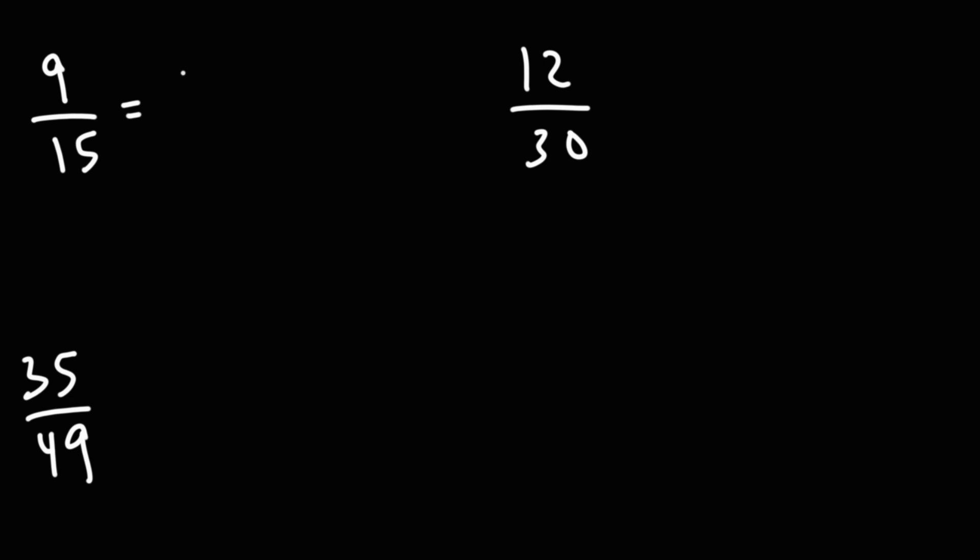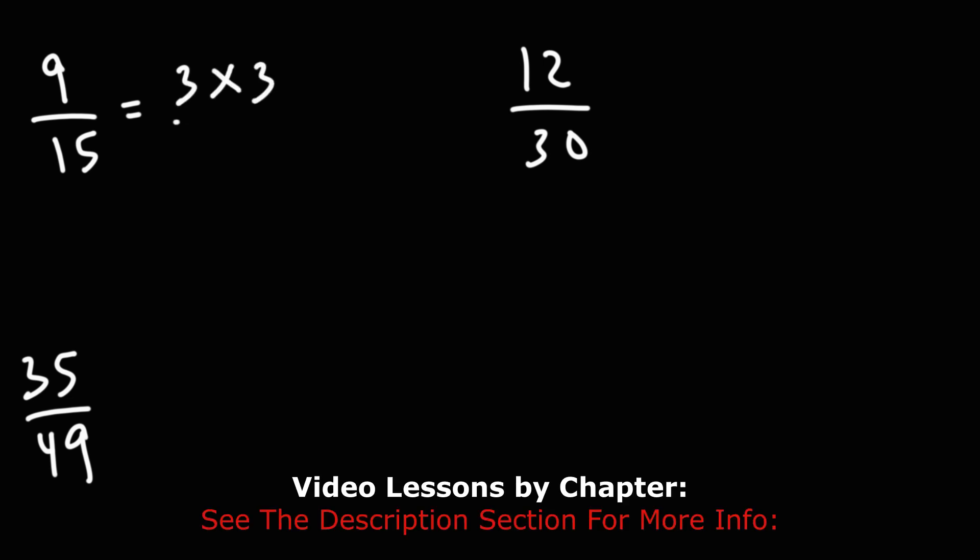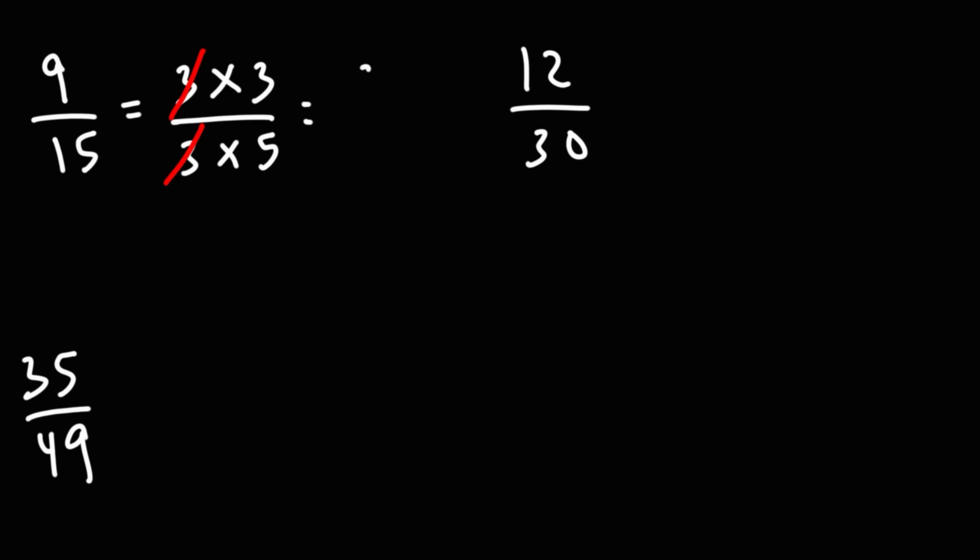So 9, we can write that as 3 times 3. 15 is 3 times 5, or 5 times 3. The order doesn't matter. We could cancel a 3, and we'll be left with 3 over 5. So that's how we can simplify 9 over 15.